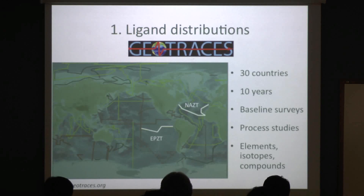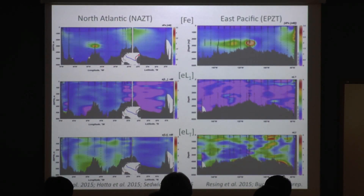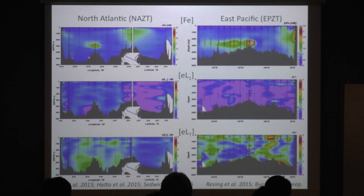For the US program, we've covered three legs: the Arctic leg, the North Atlantic zonal transect, and the East Pacific zonal transect — the two I've outlined in white are where I did the iron speciation and measured the iron-binding ligands. The North Atlantic is on the left — the North–South leg is the right panel, and the East–West cross-basin is the blue panel. For the East Pacific, this is East–West, with the East side and West side of the basin shown, depth going down.